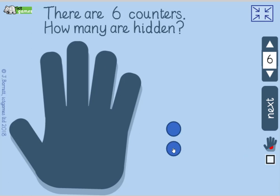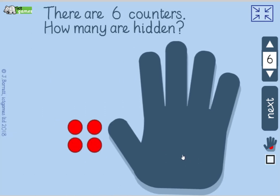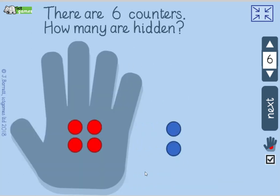So there are 2 on show here — I can see 2. How many of the 6 are hidden under here? Yeah, let's have a look: 4. We can make a maths sentence. 4 add 2 equals 6. 2 add 4 equals 6. Can you do a takeaway? 6 take away 2 equals 4, or 6 take away 4 equals 2.